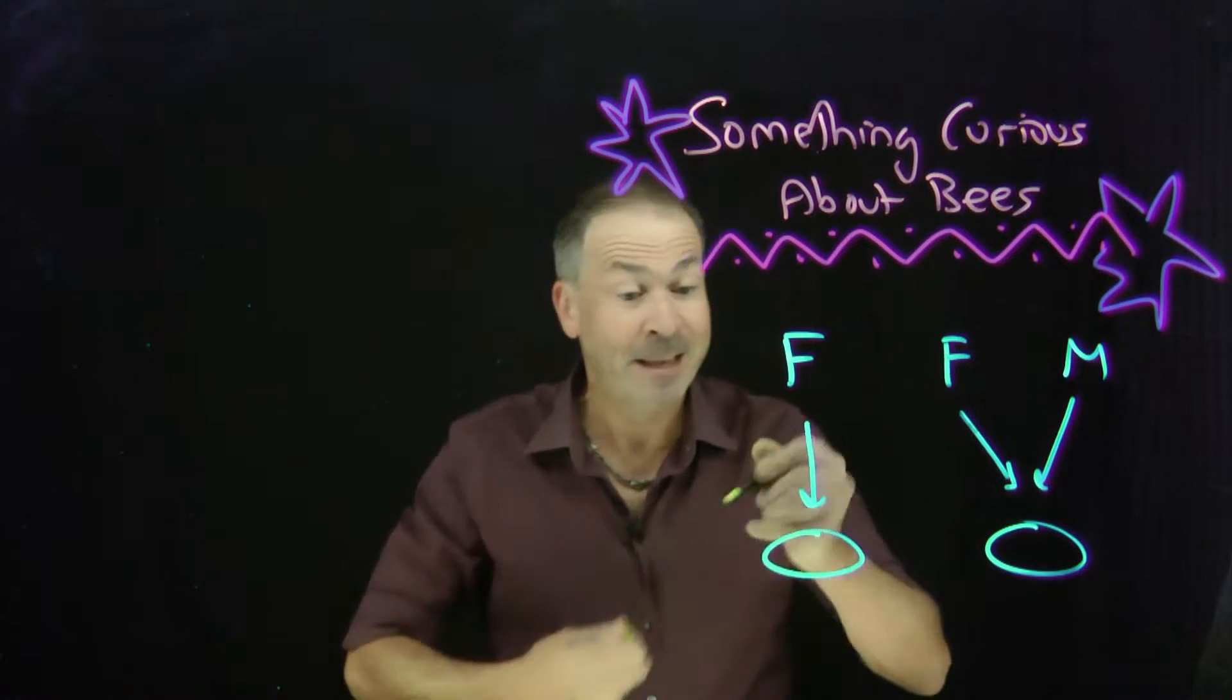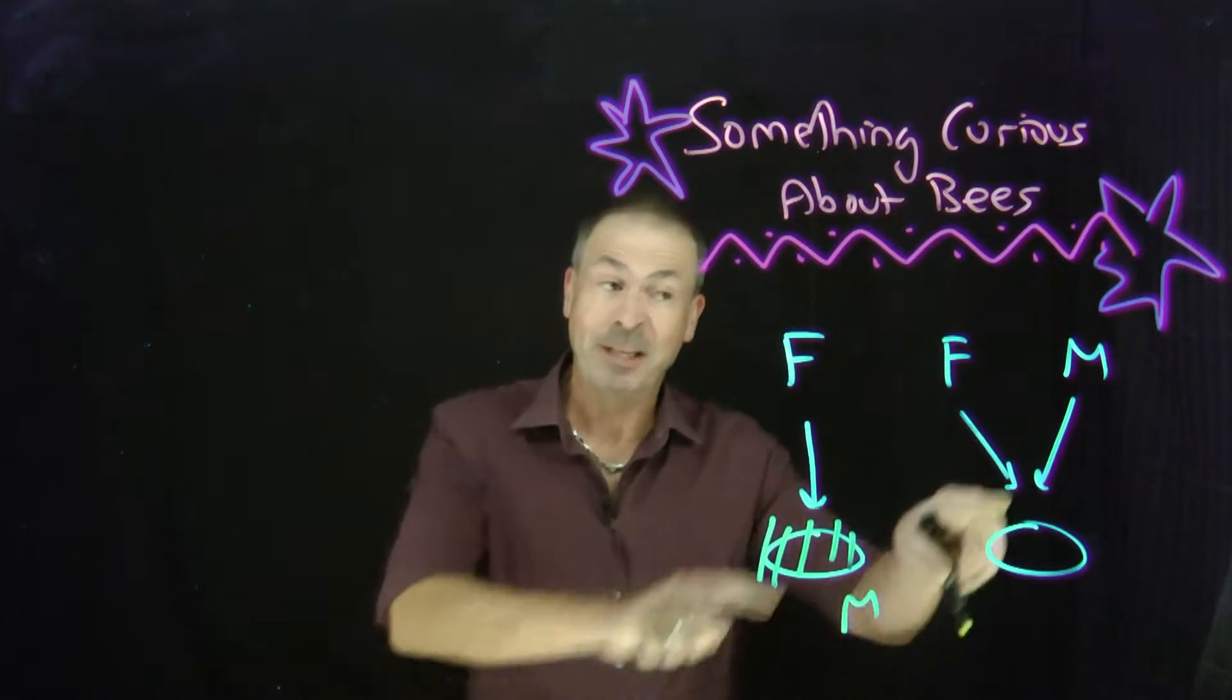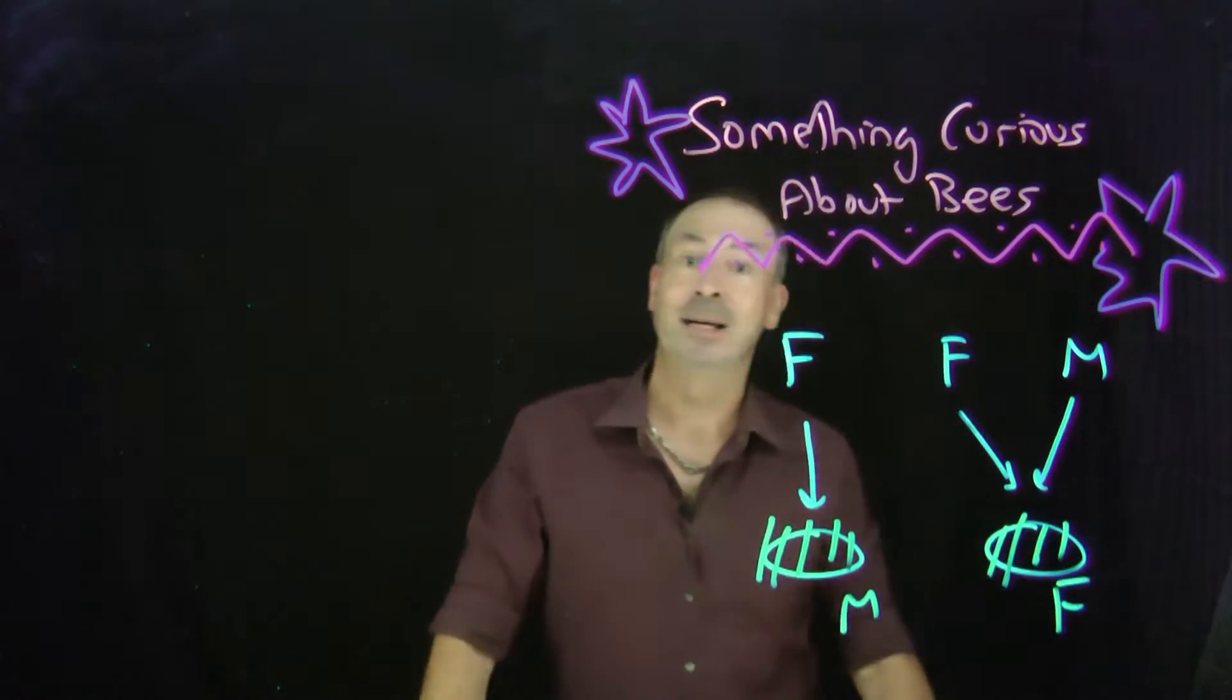If an egg is not fertilized by a male, then the egg is actually sure to hatch into a male bee, a drone. Whereas if that egg is fertilized by a male, then it's sure to hatch into a female bee, a queen.